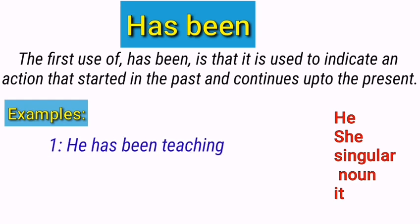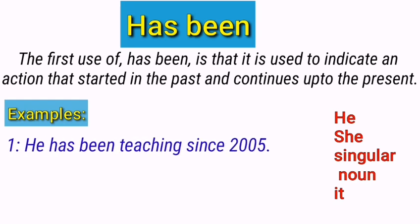He has been teaching since 2005. This is a present perfect continuous sentence and here 'has been' is used with the subject 'he.' Basically, it means that he started teaching in 2005 and still the act of teaching is continuing.